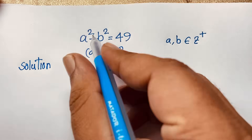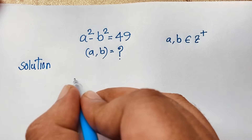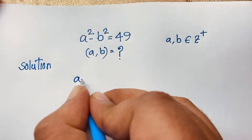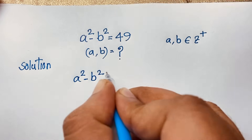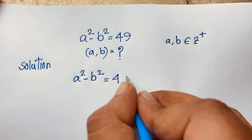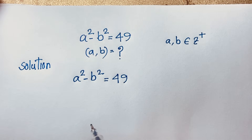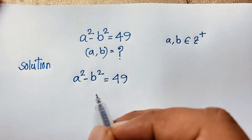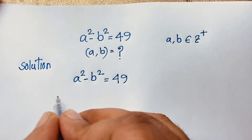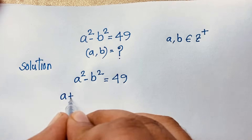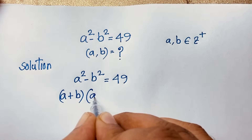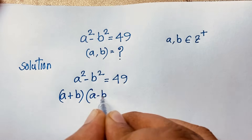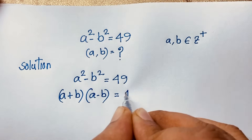Our question is a² - b² = 49. Now, a² - b² can be factored as (a + b)(a - b) = 49.